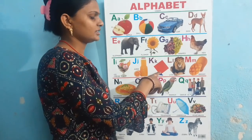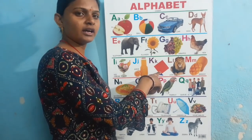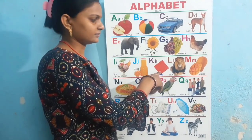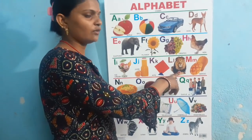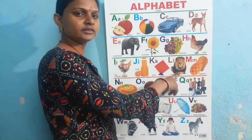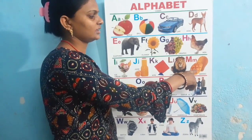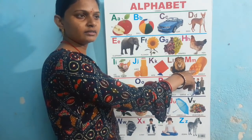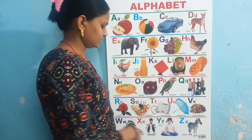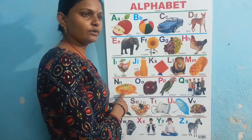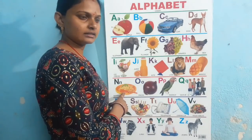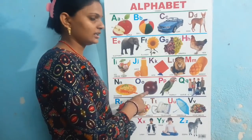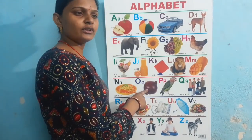K for kite, L for loin, M for mango, N for noodles, O for onion.